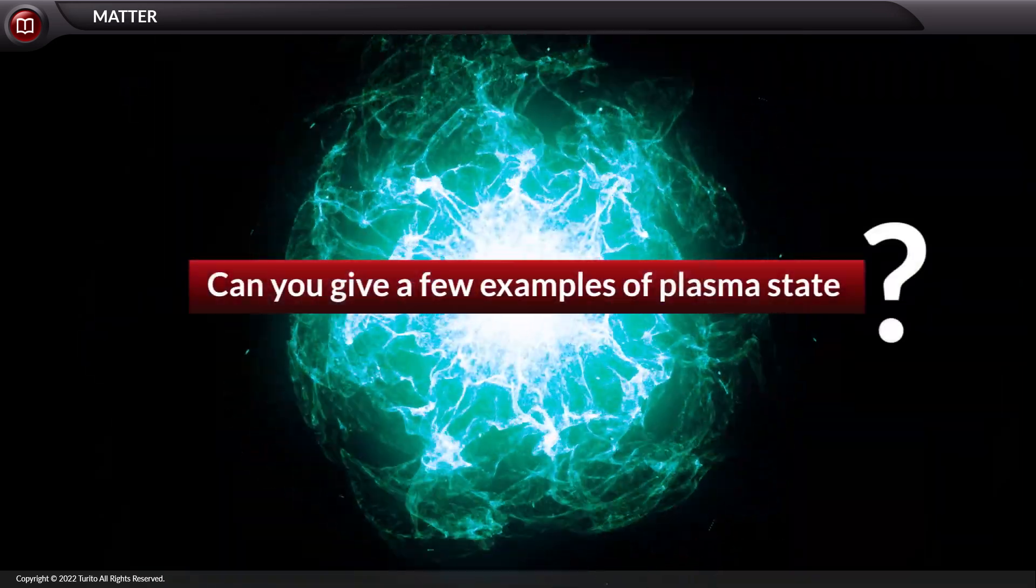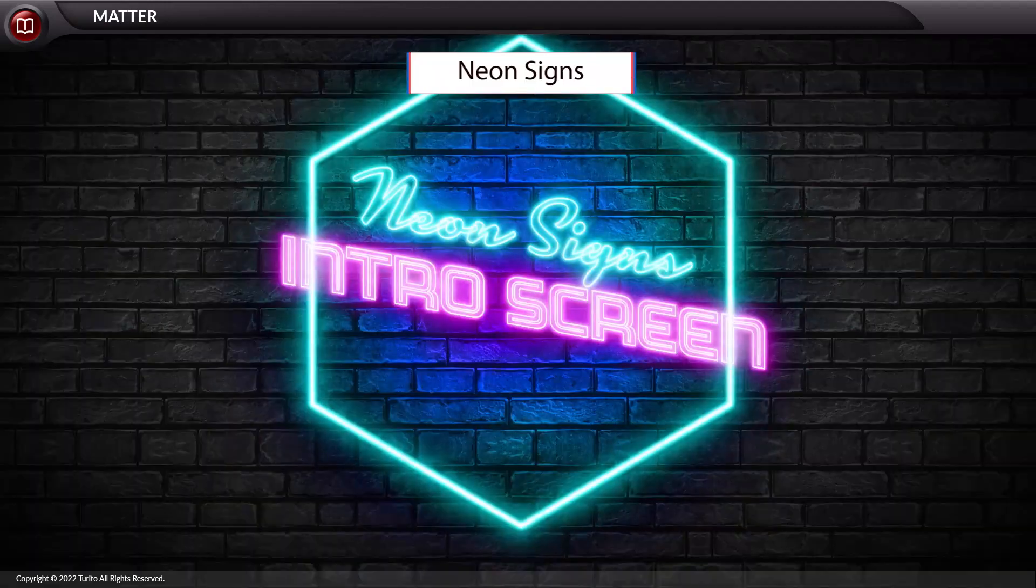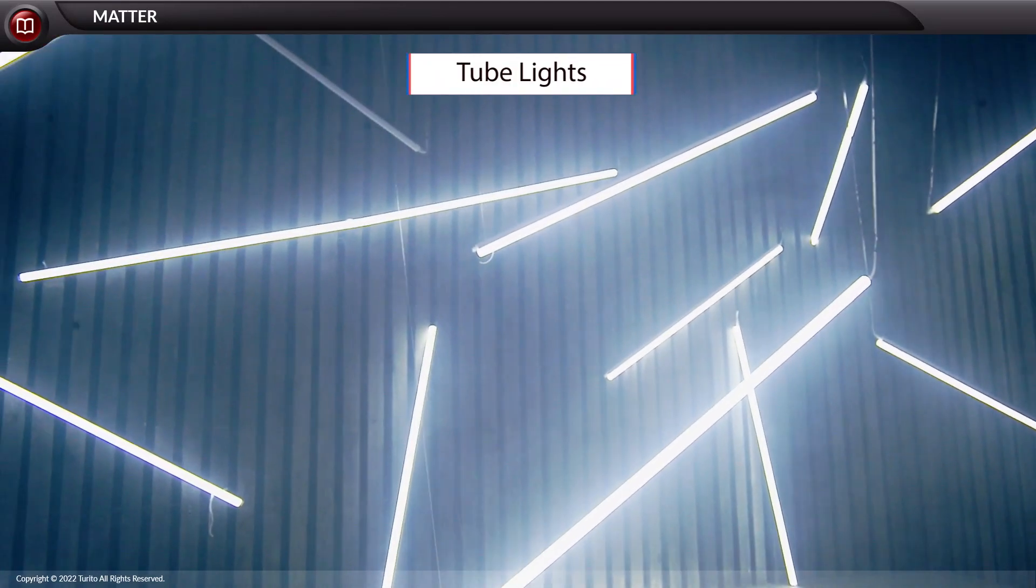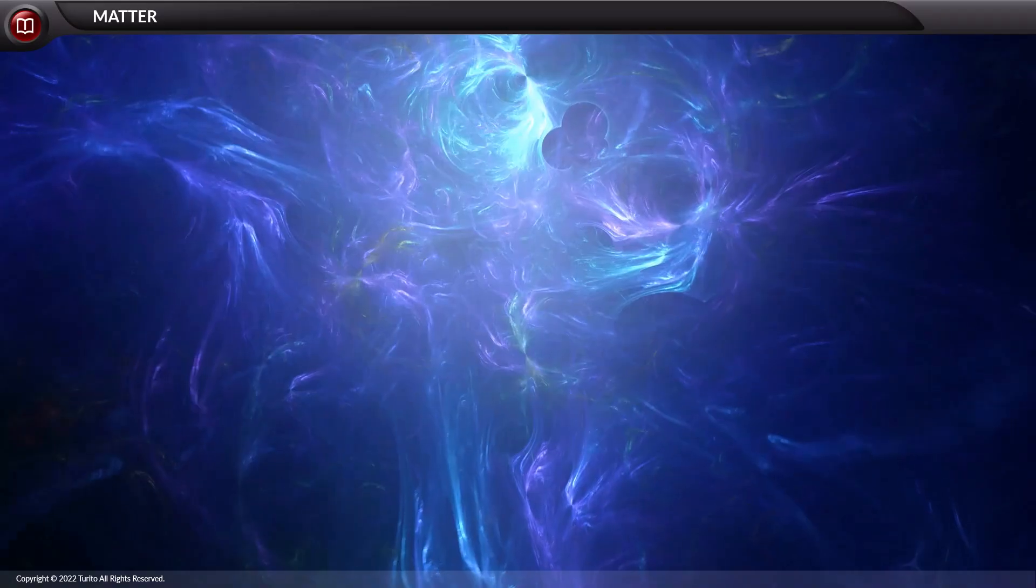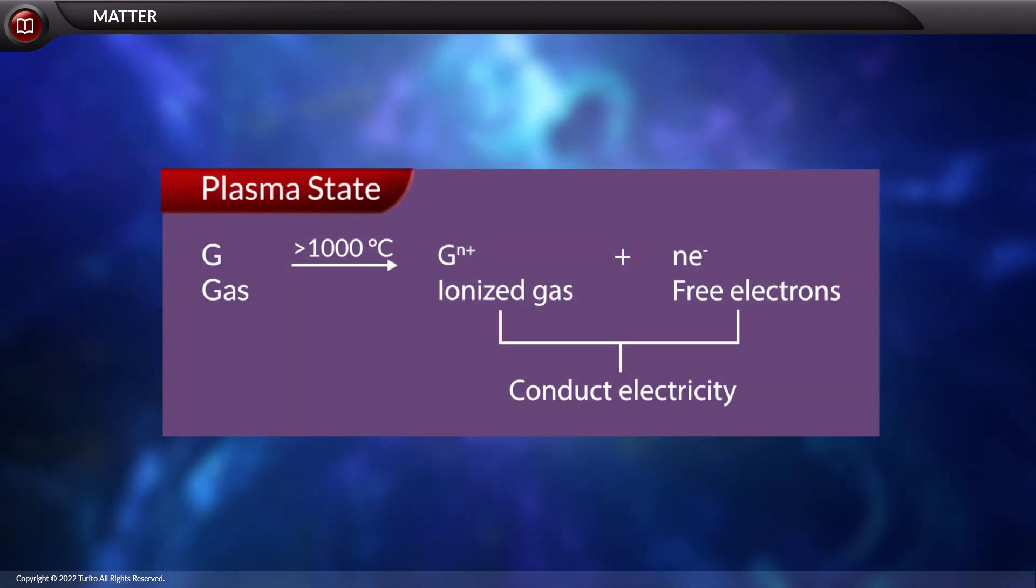Can you give a few examples of plasma state? Plasma state can be found in neon signs, tube lights, plasma TVs, auroras, and other places. So, in this video, we learned about the different states of matter. We analyzed the properties of solid, liquid, gas, and plasma in detail.